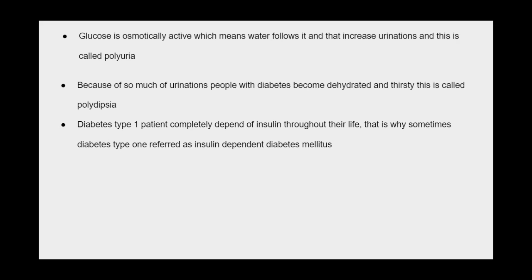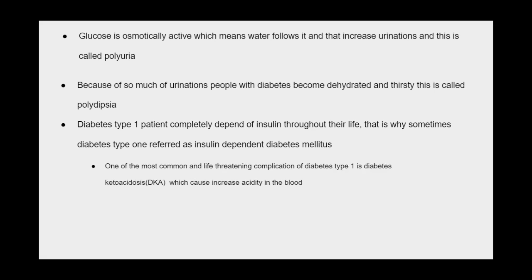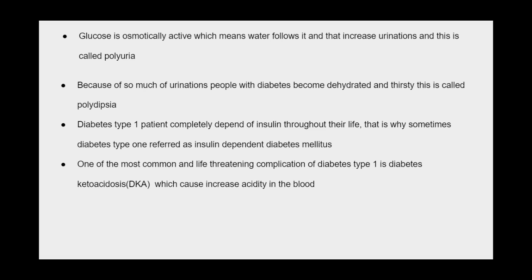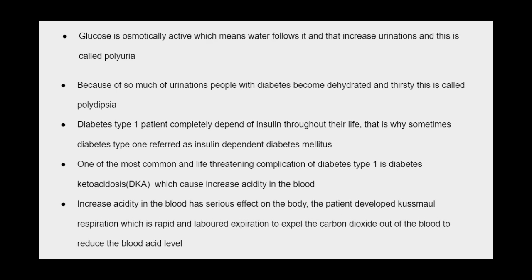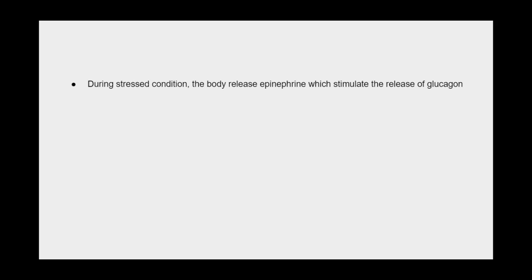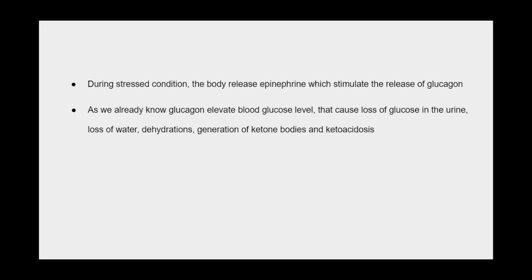Type 1 diabetes patients are completely dependent on insulin throughout their life, which is why it is referred to as insulin-dependent diabetes mellitus. One of the most common and life-threatening complications of type 1 diabetes is diabetic ketoacidosis (DKA), which causes increased acidity in the blood. The patient develops Kussmaul respiration — rapid and labored breathing — to expel carbon dioxide and reduce blood acidity. During stress, the body releases epinephrine, which stimulates glucagon release, elevating blood glucose, causing glucose loss in the urine, dehydration, generation of ketone bodies, and ketoacidosis.